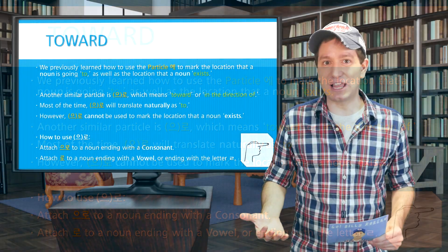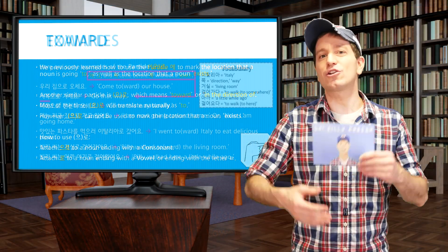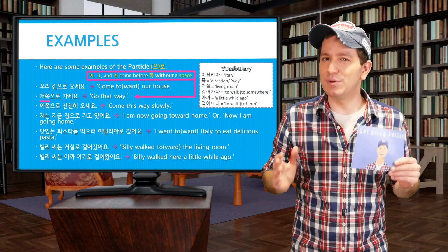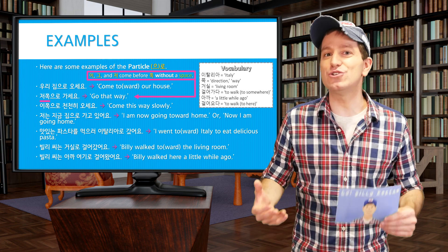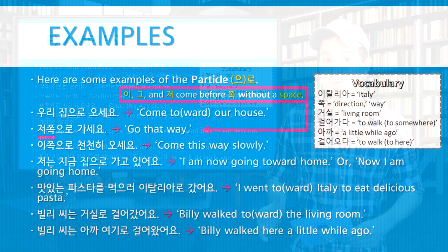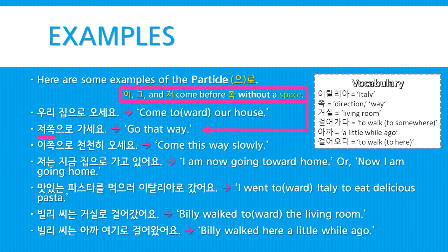Now let's jump right into a few examples. First we have, 우리 집으로 오세요 — Come toward, or come to, our house. Next, 저쪽으로 가세요 — Go that way.